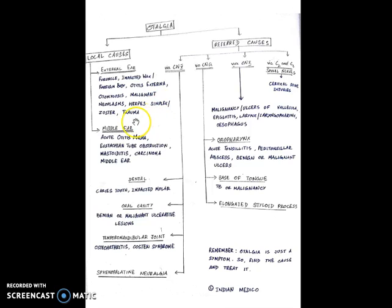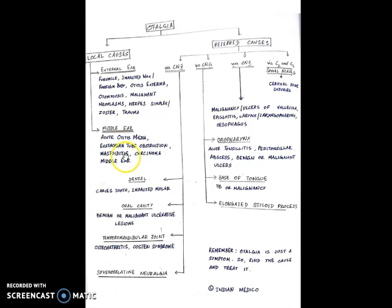Now let us see the various causes of otalgia due to a pathology in the middle ear. Otitis media, especially acute otitis media, eustachian tube obstruction, mastoiditis, and carcinoma of the middle ear are some of the causes that can lead to otalgia due to a defect in the middle ear.